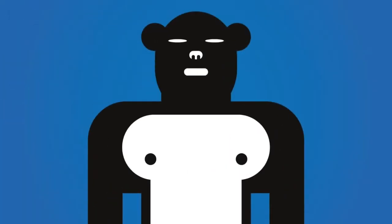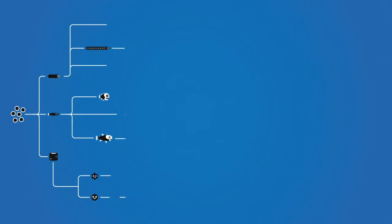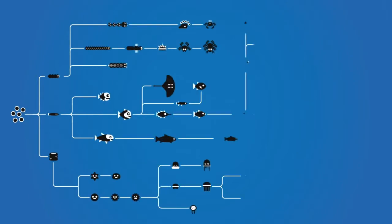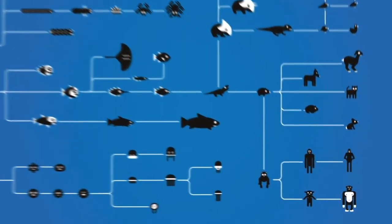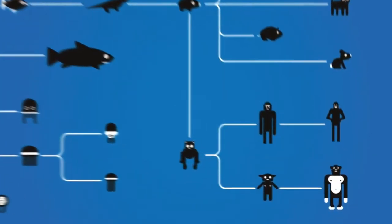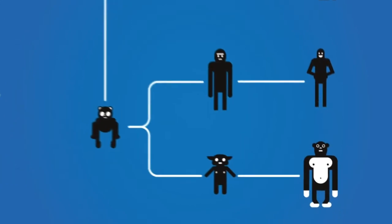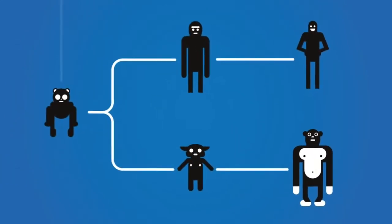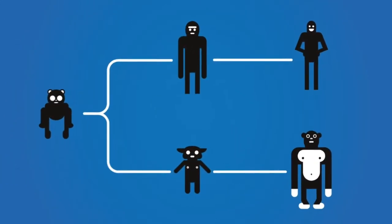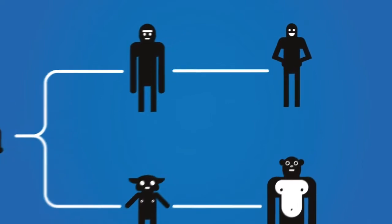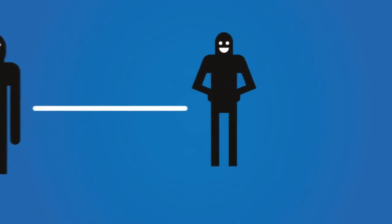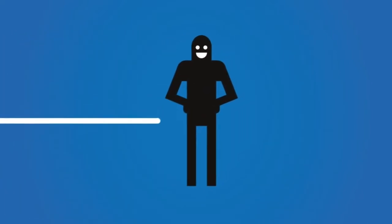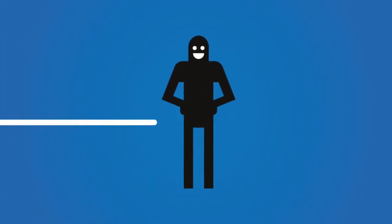First is homologous features. Features of organisms that have a fundamental similarity based on common ancestry are called homologous features. Often homologous features evolve different functions, but their similar structures provide evidence that the organisms shared a common ancestor from which they diverged over time. This is known as divergent evolution.